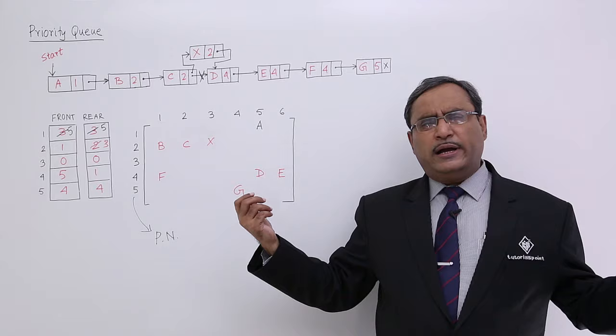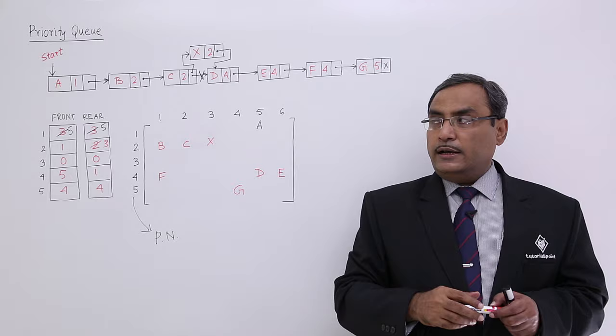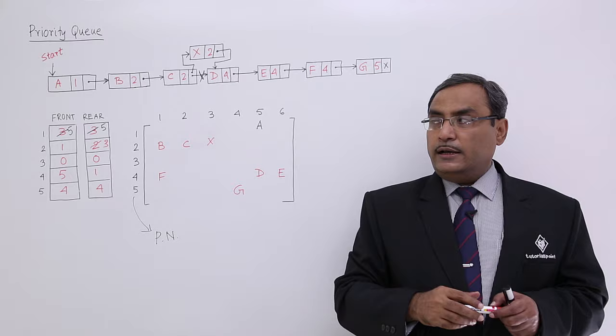Similarly, you can also perform the deletion operation. Obviously, the deletion will be done from the front end of the queue. In this way, we can easily solve this problem. I have explained this with a proper diagram and I think the representations are very simple. I think you have got the logic. Thanks for watching this video.